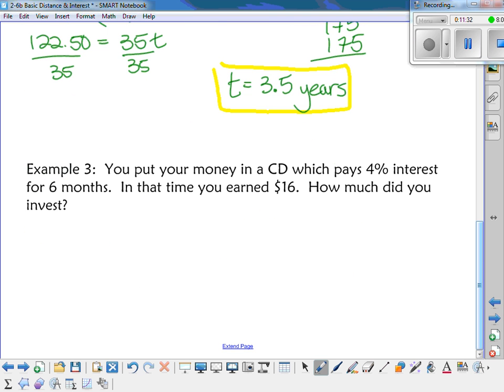So this last one, you're going to put your money in a CD. Do you guys know what a CD is? When we're talking about banking, do you know what a CD is? It's a certificate of deposit. So what a certificate of deposit is is when you agree to the bank, I will leave this in your bank for six months. I won't touch the money. Or your certificate of deposit might be for a year term. They usually have a fixed term. You promise you're not going to take the money out, and that way they actually pay you a little bit better interest rate. So that's what a CD is. So you put your money in a CD, which pays 4% interest for six months. In that time, you earned $16. How much did you invest? So what I want you to do right now is go through it and mark what's I, what's P, what's R, what's T. So just mark the I, P, R, and T on the word problem. Let's make sure you got it marked up right.